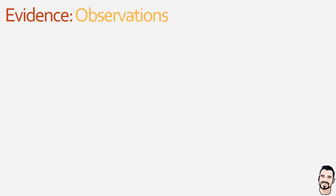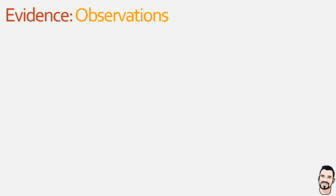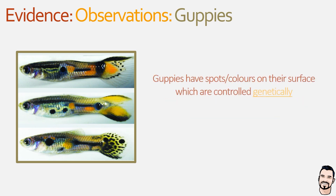Our final piece of evidence is based on our own direct observations — we view evolution occurring in real time. There are small-scale evolution experiments we can do using organisms with very short life cycles to observe the microevolution process as it happens. We'll look at a range of examples where we have directly witnessed evolution in action, starting with guppies. Guppies are small fish that have a number of different spots on their surface, which are controlled at a genetic level. Through microevolution, male guppies can alter the number of spots they present.